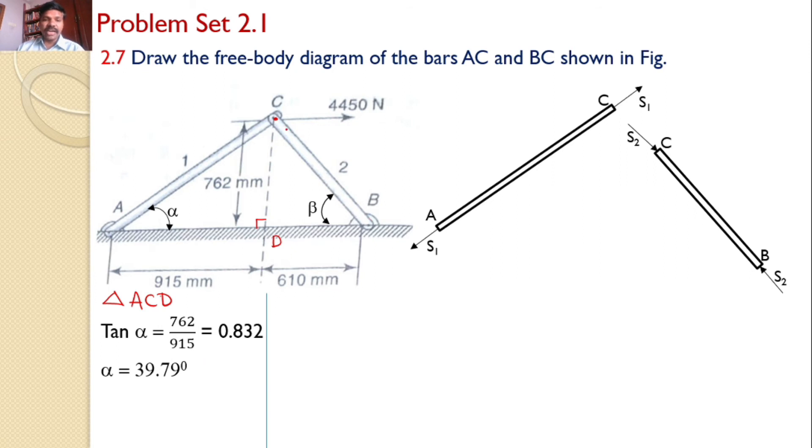Similarly from the right angle triangle CBD, tan beta is equal to 762 by 610, opposite side by adjacent side, which is 1.249, and beta value is equal to 51.32 degrees.